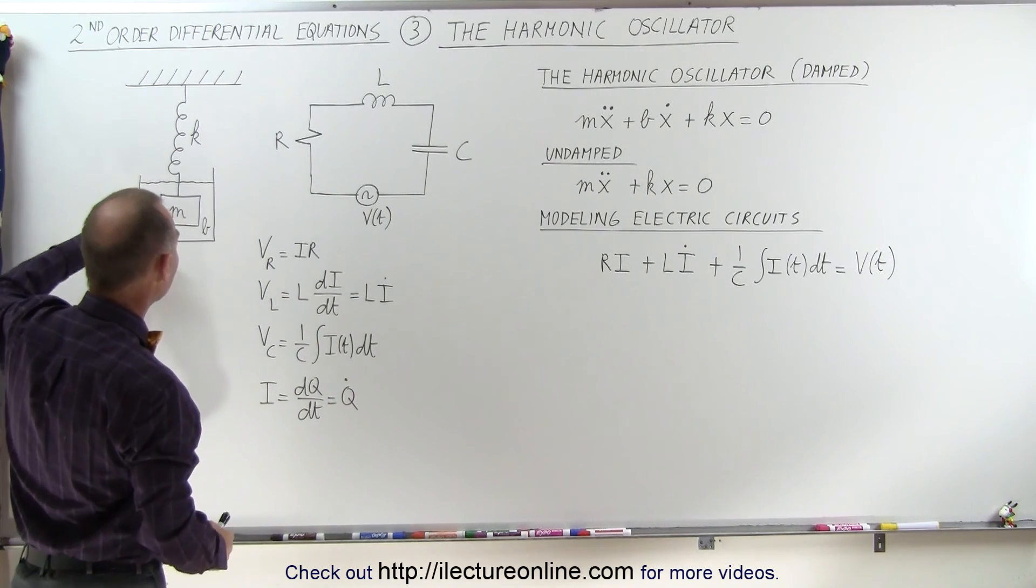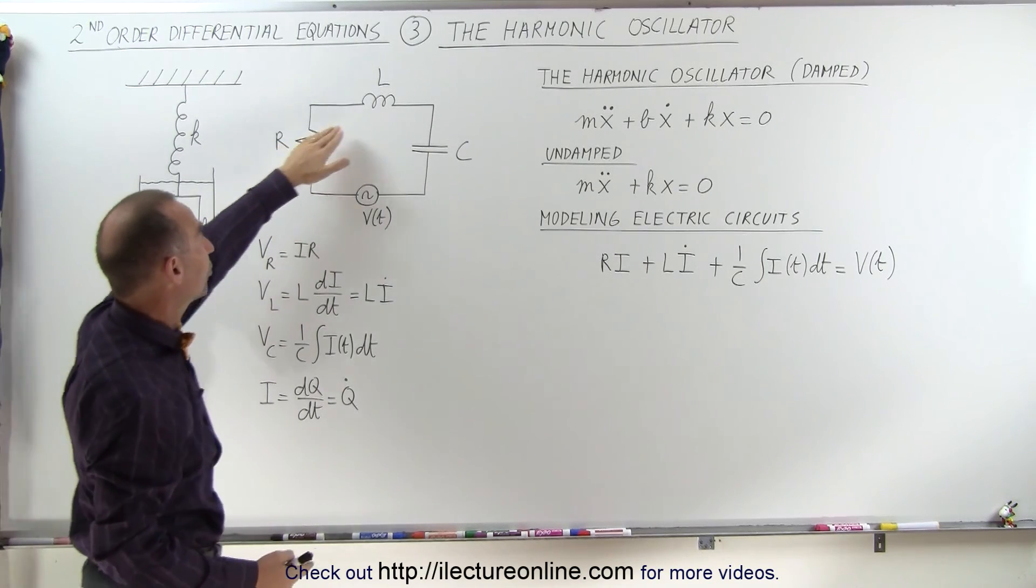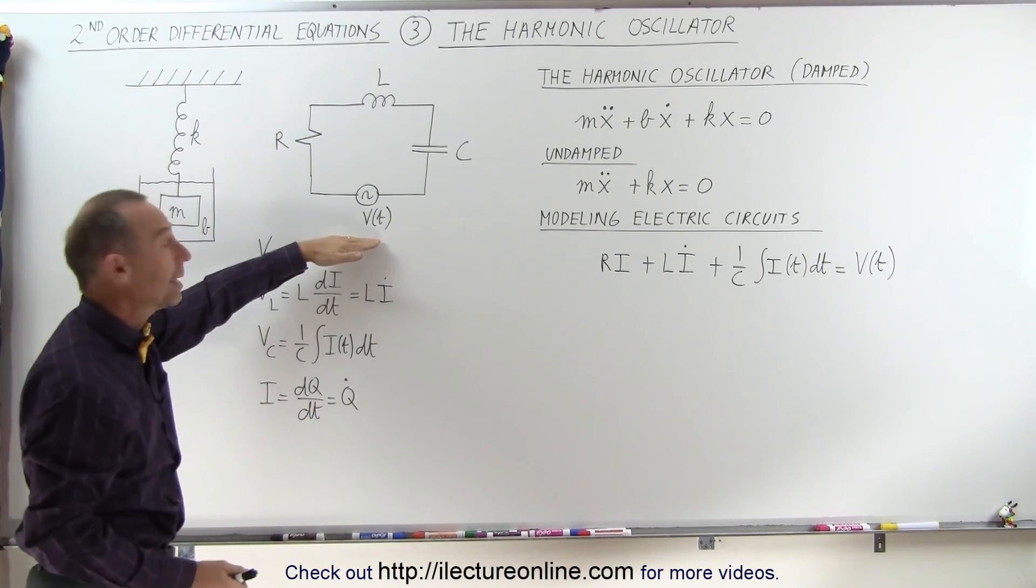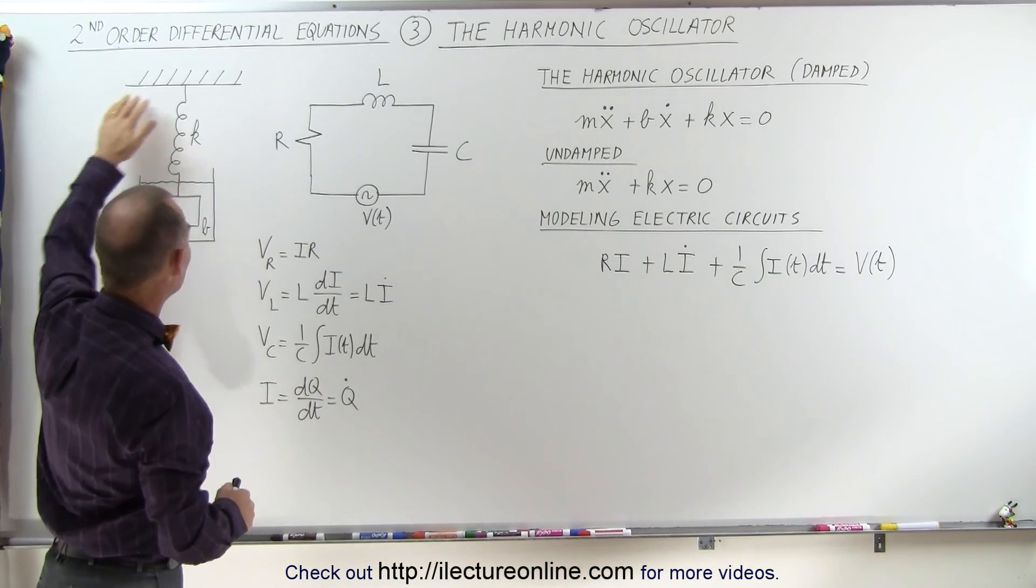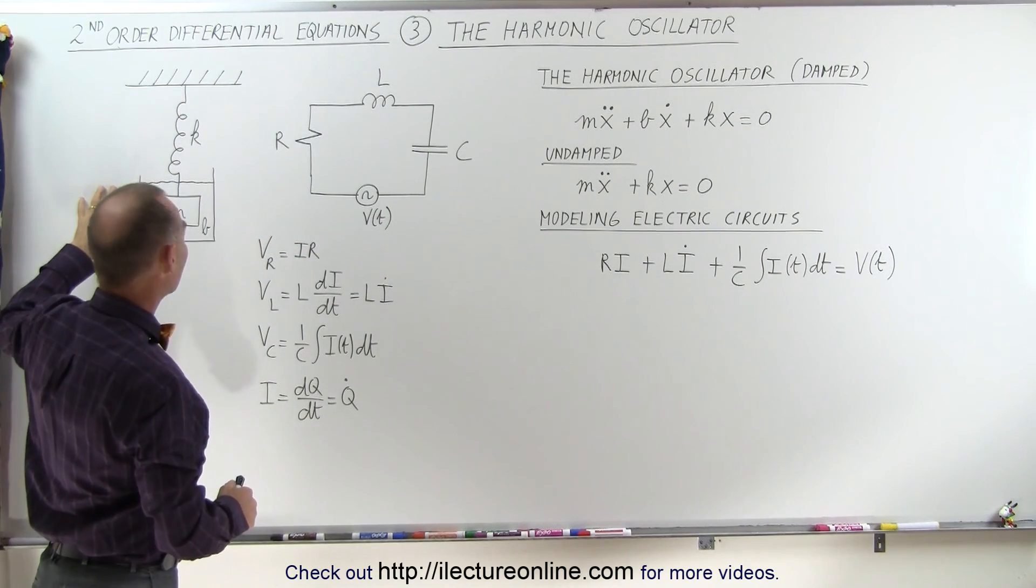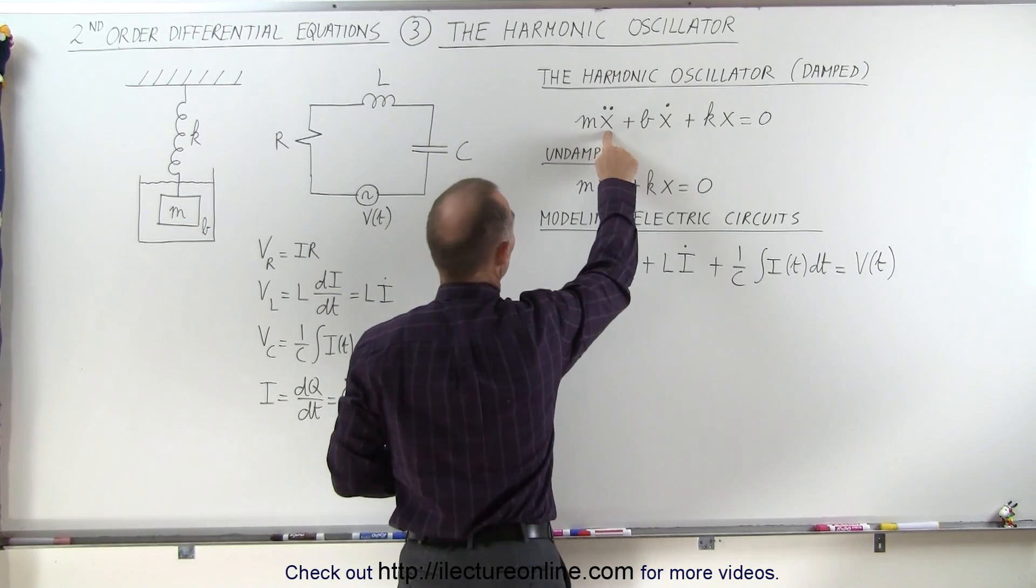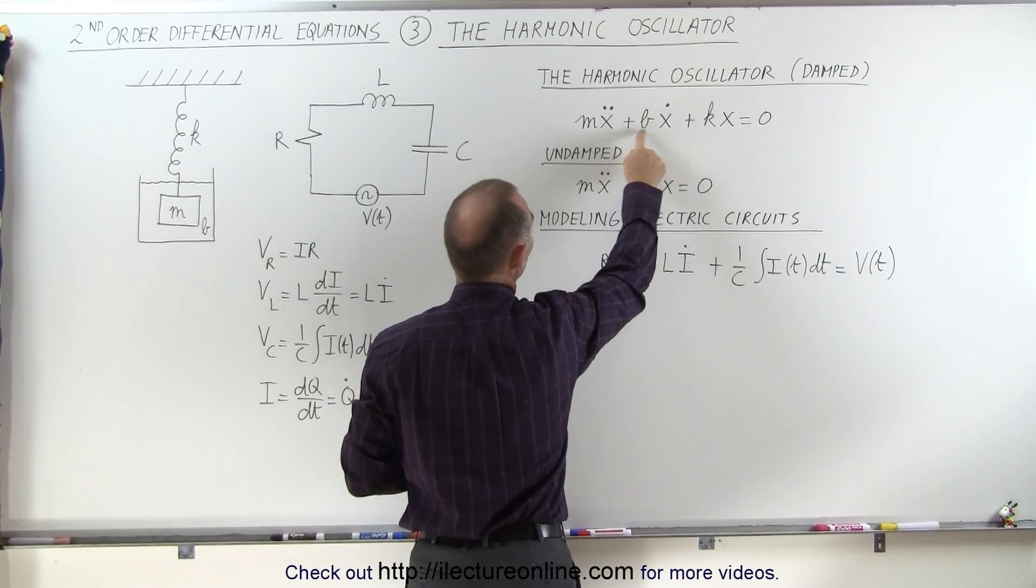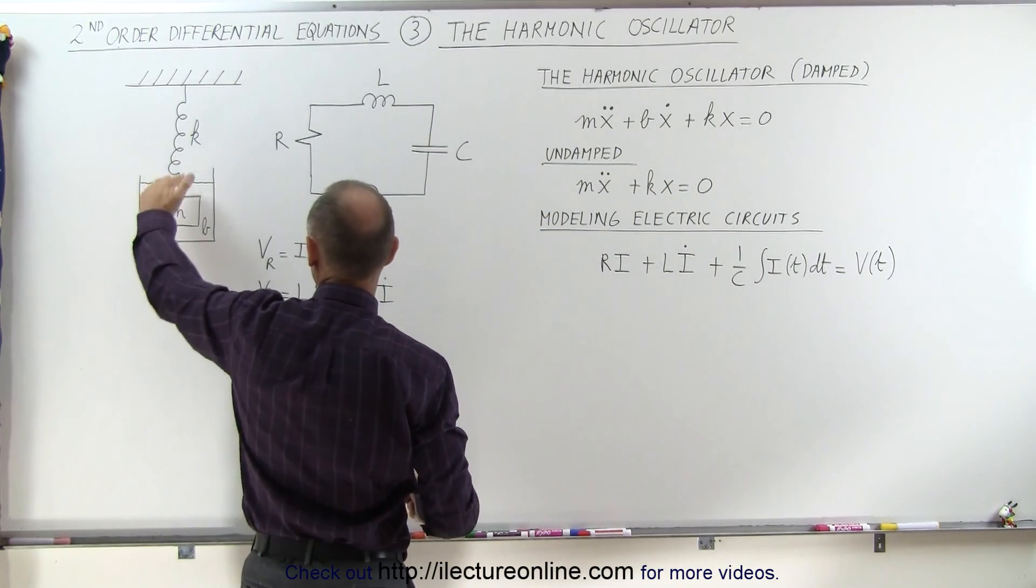Such as a harmonic oscillator that may be damped, and like circuits that have resistors, inductors, and capacitors in them that may be driven by some sort of voltage source. Notice the equation that describes a harmonic oscillator like this, which is damped, can be shown to be the mass times acceleration of the object, plus some force retarding the motion, maybe because of some dashpot.